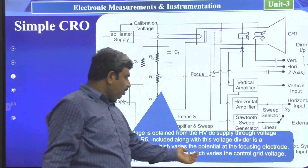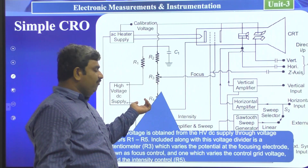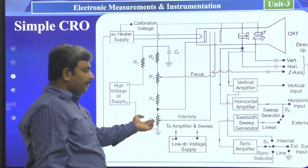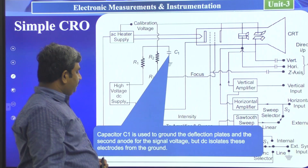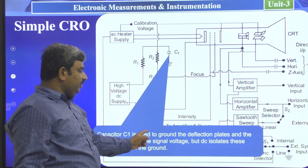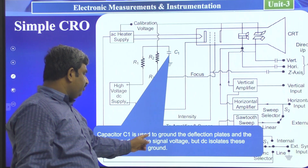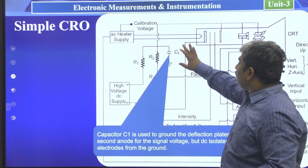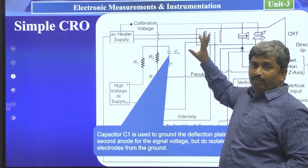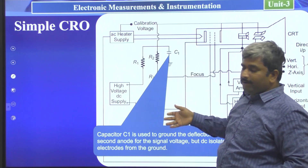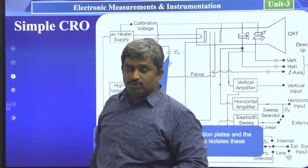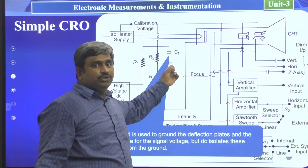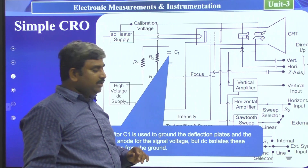R3 is the focus control, and R5 varies the control grid voltage, called the intensity control. Capacitor C1 is used to ground the deflection plates and the second anode for signal voltages, while DC-isolating these electrodes from ground. Whenever excess voltages reach the deflection plates, they are discharged through capacitor C1 to ground.